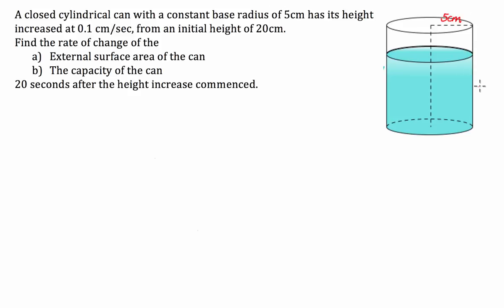We'll call this the initial height where the blue is — it's 20 centimetres. We'll write it in anyway, so we have 20 centimetres as our initial height. We need to find the rate of change of the external surface area of the can and the capacity of the can, 20 seconds after the height increase commenced.